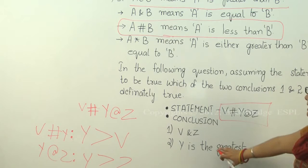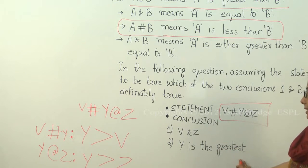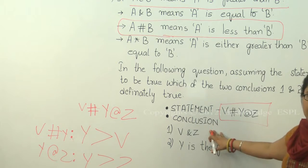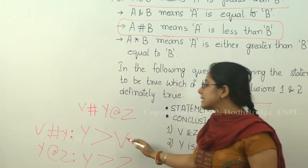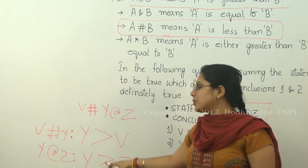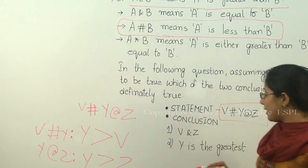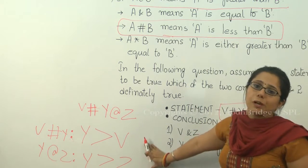Second one is 'Y is the greatest.' Now regarding the first statement, we cannot say whether it is definitely true, since V is less than Y and Z is also less than Y, but we don't know whether V and Z are equal to each other.